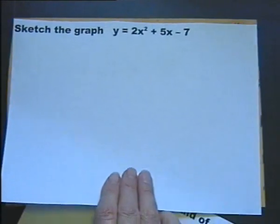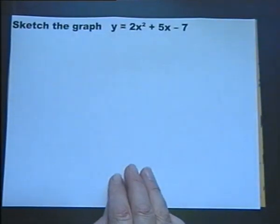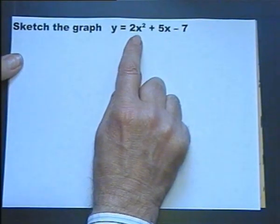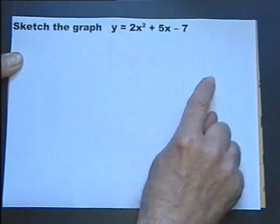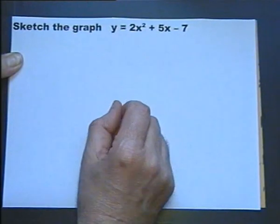So let's sketch this graph. Now just by looking at the equation, it's a quadratic so it's going to be a parabola. And because it's plus with the x squared, it's going to be like that. If it was minus with the x squared, it would be like that. So you can see a lot of things just by looking at it.